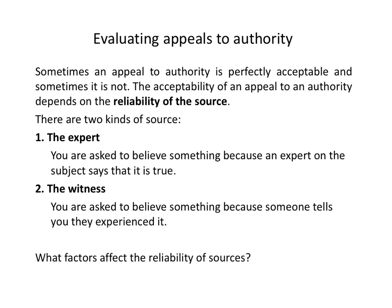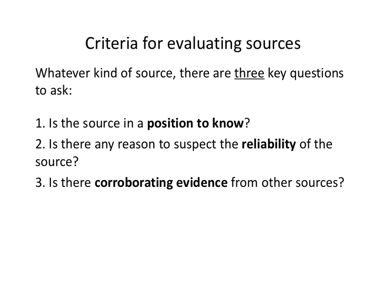There are two main types of source or authority: experts and witnesses. The criteria for judging them are essentially the same, although they apply in slightly different ways. Whatever the kind of source, here are the three questions or criteria you should ask. First, is the source in a position to know? Second, is there any reason to suspect the reliability of the source? And third, is there any corroborating evidence from other independent sources?